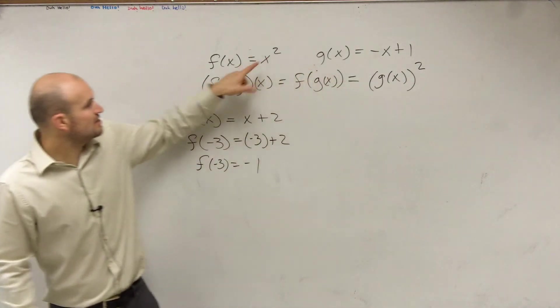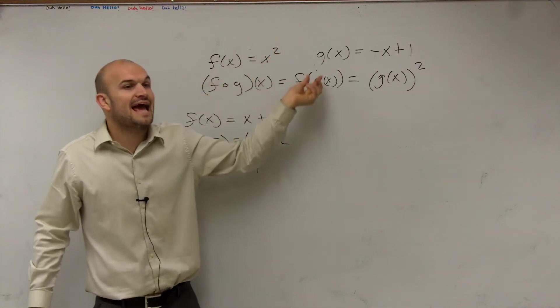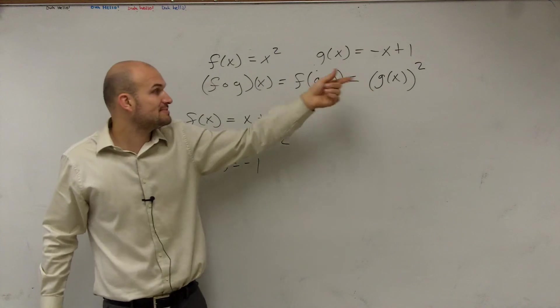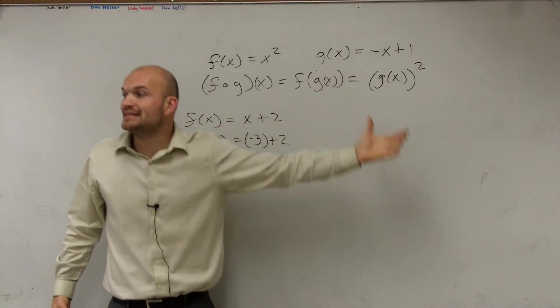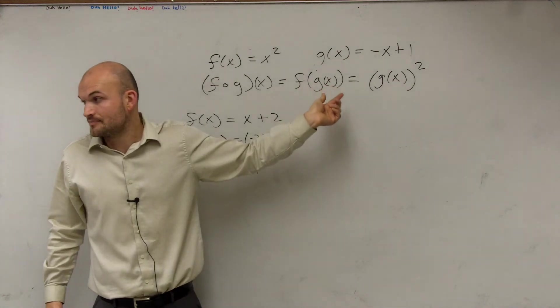Well, because what's the function for f of x? It's x squared. And I'm plugging in. I want to find f of g of x. So I'm taking what g of x is and plugging the whole thing into the function of f of x. Does that kind of make sense?